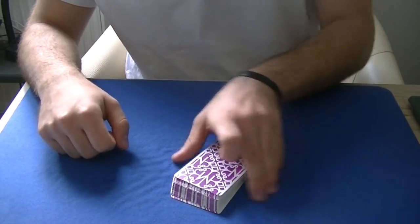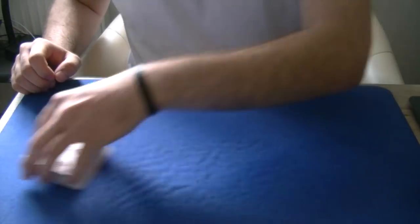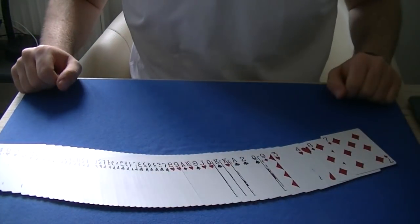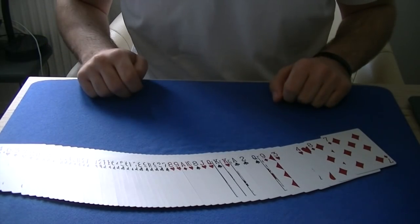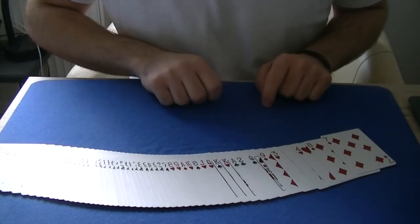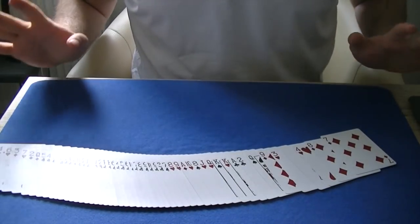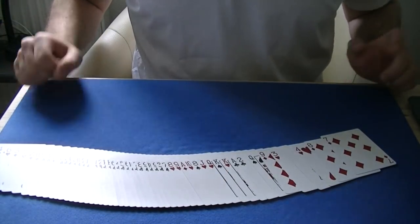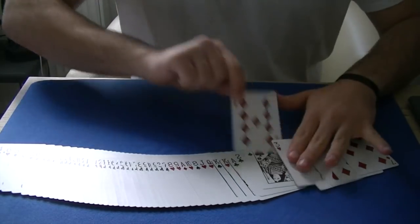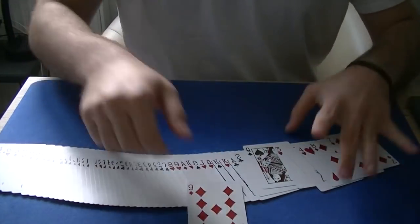Once you have done that you're gonna say let me spread the pack and I hope to find your card. At this point you are looking for your queen of spades right here and you know the card above it, the nine of diamonds in this case, is their selection. Now of course you don't want to go inside the pack and say okay that's your selection here you go. Don't do that.